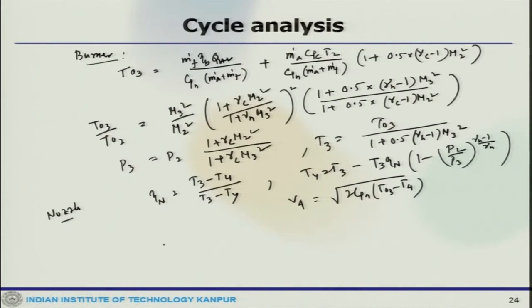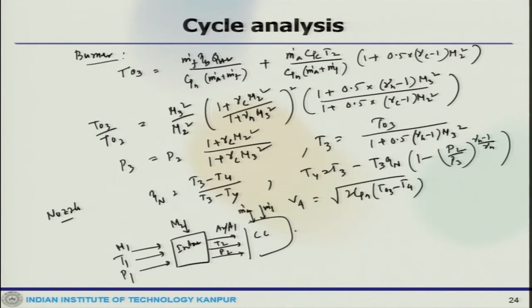If we put the block diagram, it looks like we have a block diagram here. This is intake with M1, T1, P1. This is where M2, A2 by A1. Then combustion chamber. From here it goes T2, P2, M_dot_A, M_dot_F. Then we get to nozzle, where M3, P3, T3, and then finally T4, V4, and this goes here.